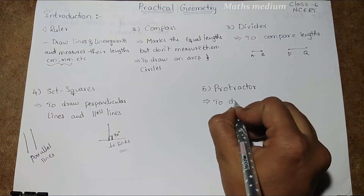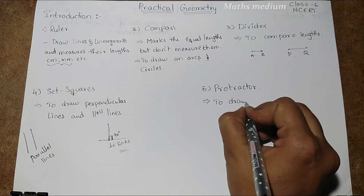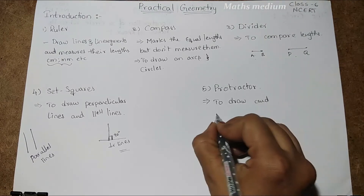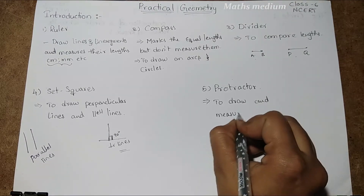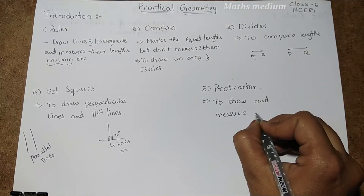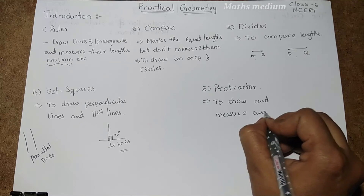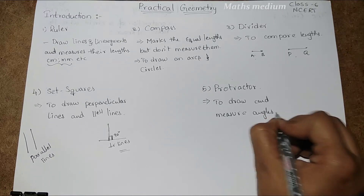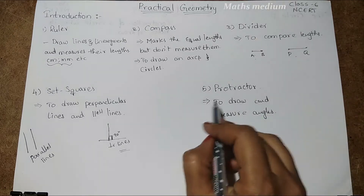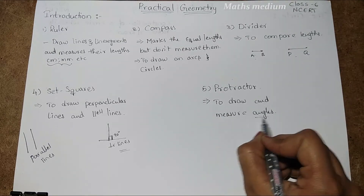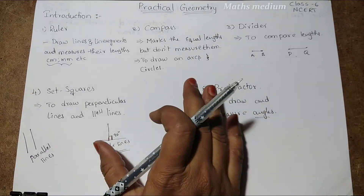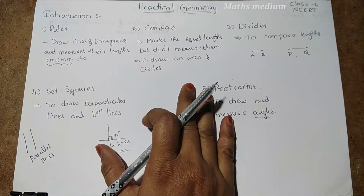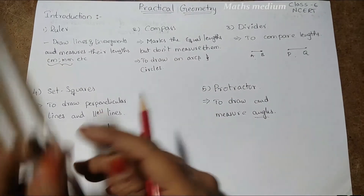Next, coming to the protractor — it is used to draw and measure angles. By using a protractor we can measure the angles. Now we are going to see this visually.